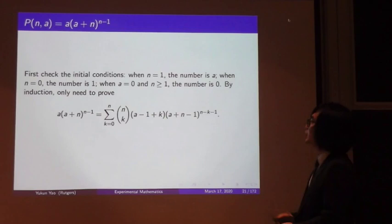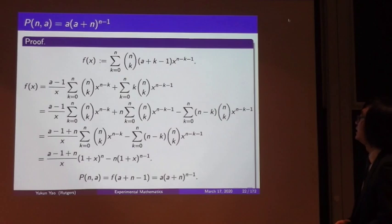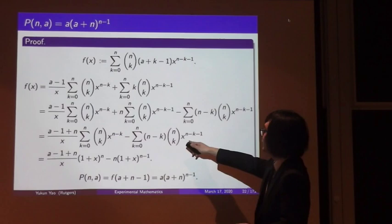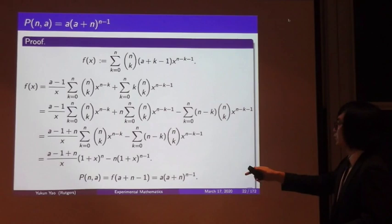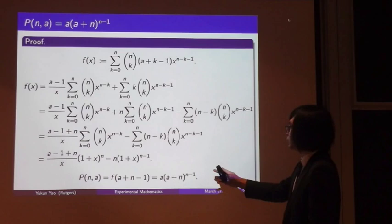To prove p(n,a) = a·(a+n)^(n-1), we proceed by induction. After checking the initial condition, we define a function f(x) and apply the binomial theorem to verify the required identity. Plugging in x = a+n-1 yields the formula for a-parking functions, and when a=1 it gives exactly (n+1)^(n-1) as expected.